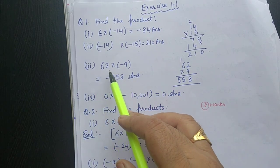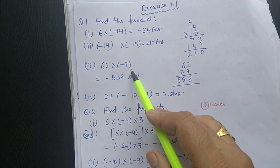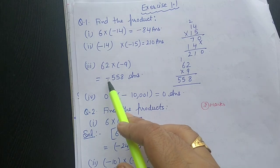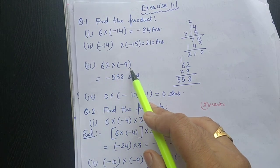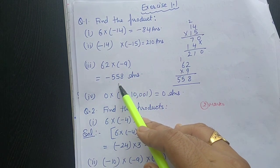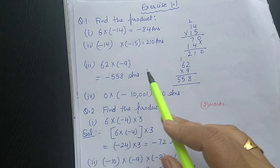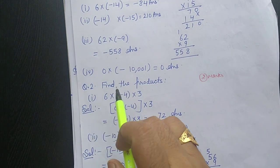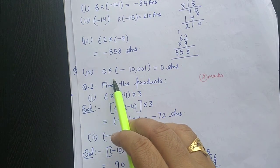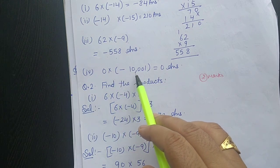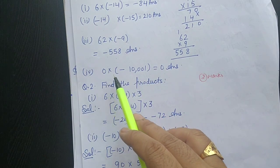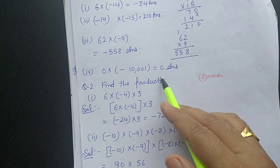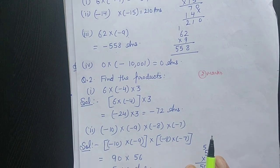The third part is 62 multiplied by minus 9. Your answer will be negative because 62 is positive and 9 is negative, so the answer is minus 558. The fourth part is 0 multiplied by minus 1001. Zero multiplied by any number gives us 0.